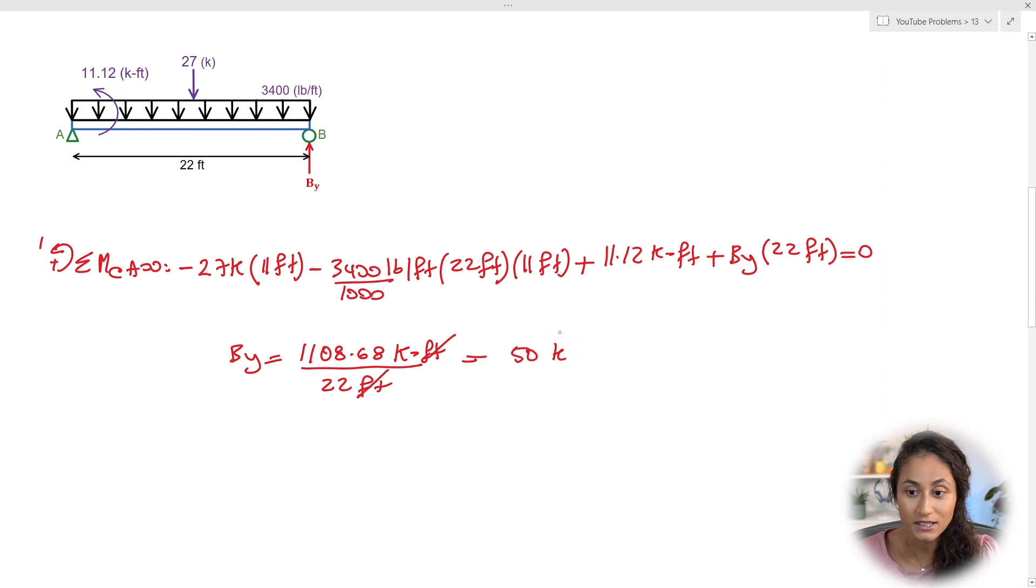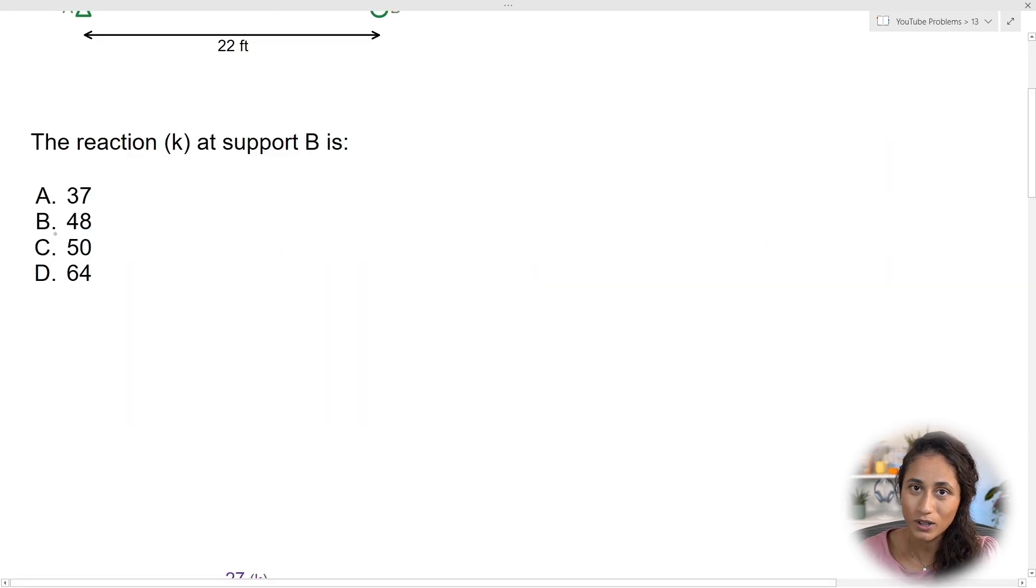Now also note that 50 kips came out to be positive which means our assumption is correct, By is going up. Now if we take a look at the multiple choice the answer is going to be C.